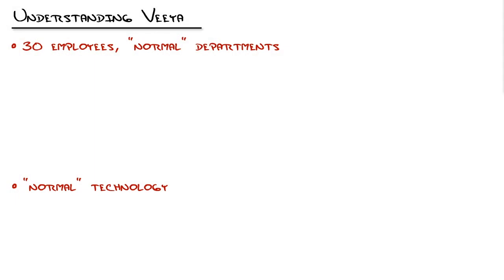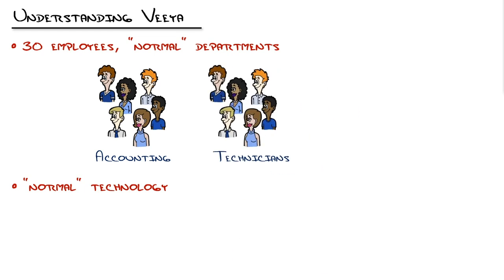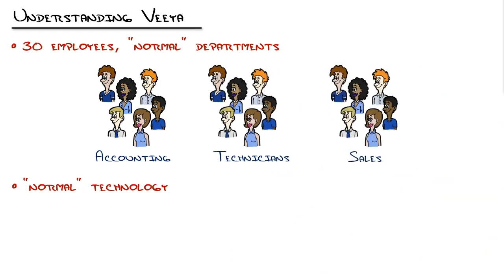So what is VIA? VIA is my organization — a managed service provider that delivers IT services to schools and nonprofits primarily, and some businesses as well. If you were to walk in the door, you would see normal departments: accounting, technicians, and sales. This is a high-level view; you could subdivide those. In accounting, we have purchasing, inventory, and traditional accountants. Among technicians, we have engineers, technical account managers, some that go to sites, and some that stay behind the scenes. But you'll see that all of that doesn't really matter, and I'll explain why when we get more into the VLANs.